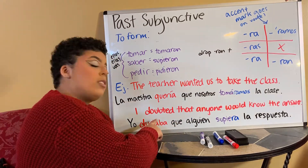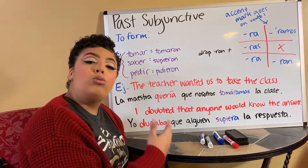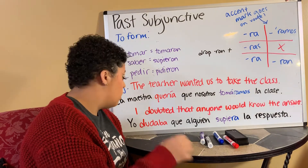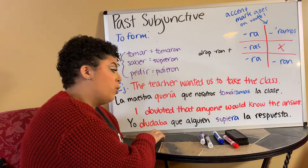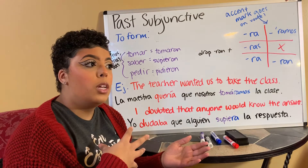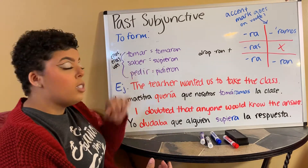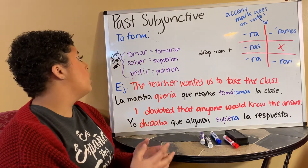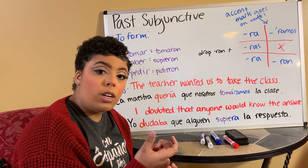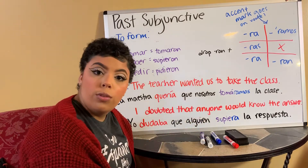So then the second example: I doubted that anyone would know the answer — yo dudaba que alguien supiera la respuesta. Dudaba, again, in the imperfect. And then saber — remember, these are going to change; you need to keep that irregular. So just like how saber is supieran in the ellos form in the preterite tense, you need to keep that irregular and not forget that when you are conjugating these in the imperfect subjunctive.